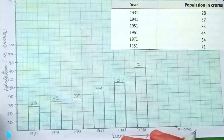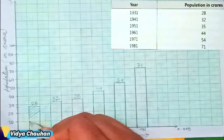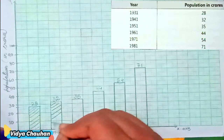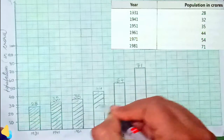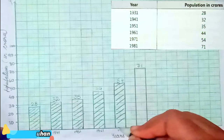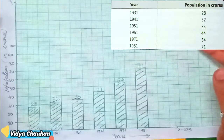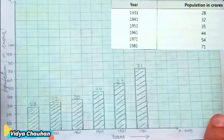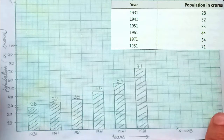Now the bars are drawn. To make the graph clearer, shade each bar using a pencil or color them with different colors. Shading helps distinguish the bars from the rest of the graph grid; otherwise the bars may get mixed up with the columns of the graph. This completes the bar graph. I hope you have understood how to represent data on a bar graph. Thank you, students, have a great day!